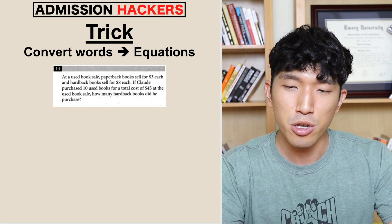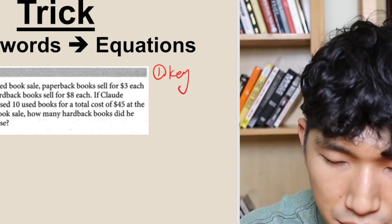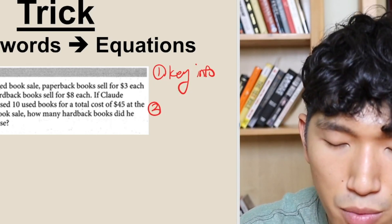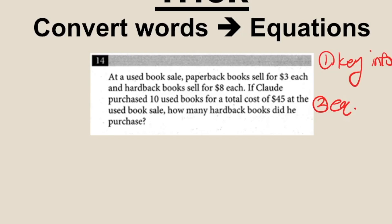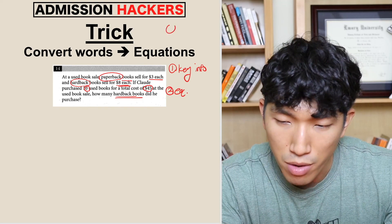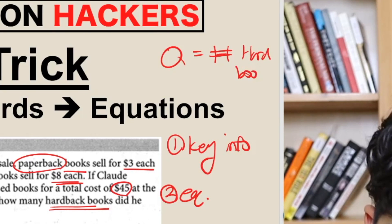Let's dive into this question. Whenever it comes to a word problem, the first thing you want to do is identify key information. And based on the key information, we're going to create equations. So let's look at this question: at a used book sale, a paperback book sells for $3 each and a hardback book sells for $8 each. If Claude purchased 10 books at a total cost of $45, how many hard books did he purchase? So what we're looking for is the number of hard books.